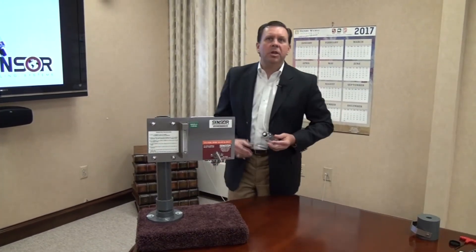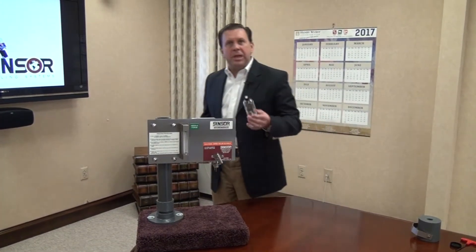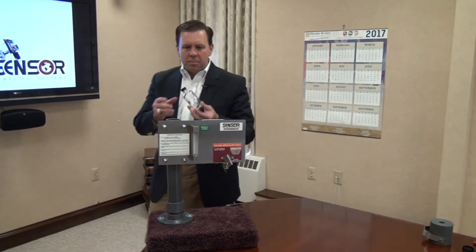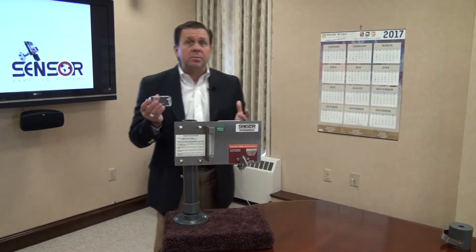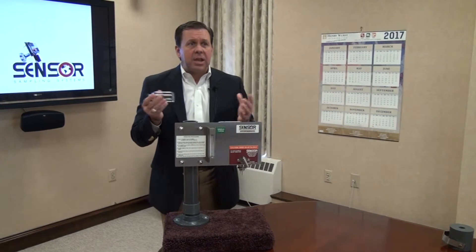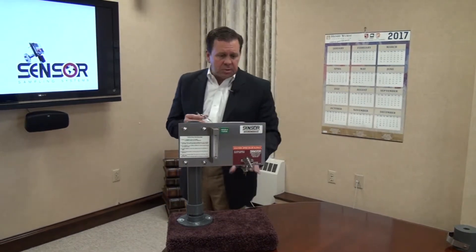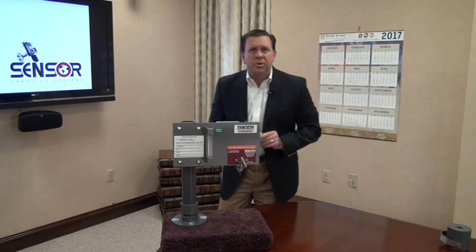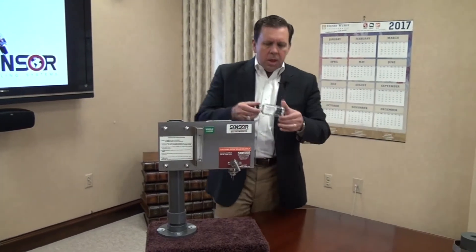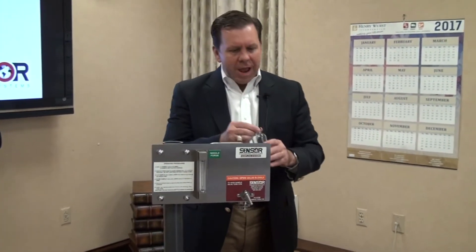So for low pressure liquid sampling, typically we're sampling into a sample bottle. Now the bottle for our systems can be of any size, any geometry. We will custom machine the shroud so that it fits your bottle. This particular one is a Boston round bottle.